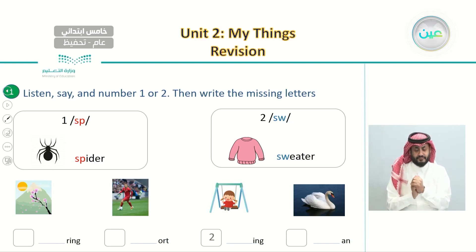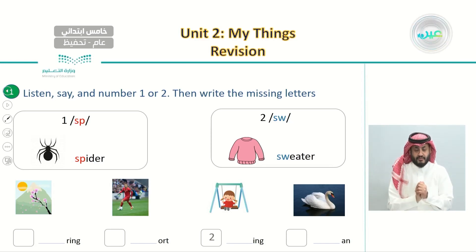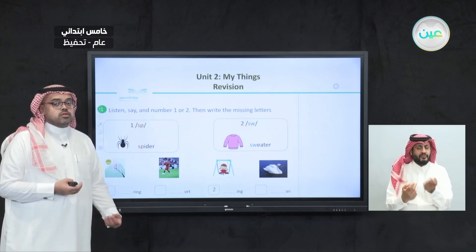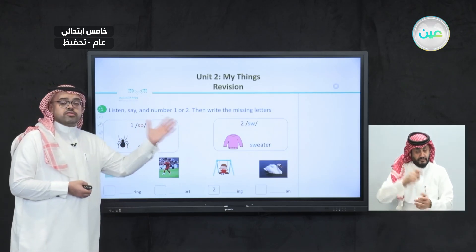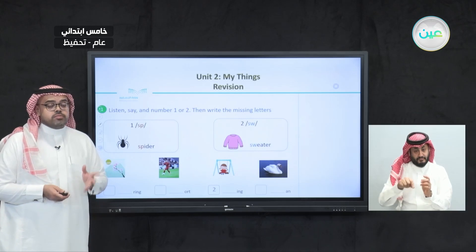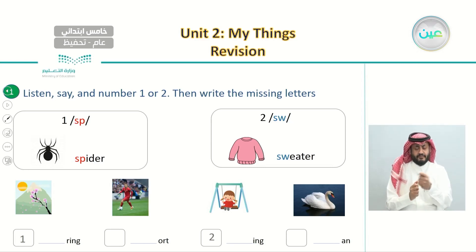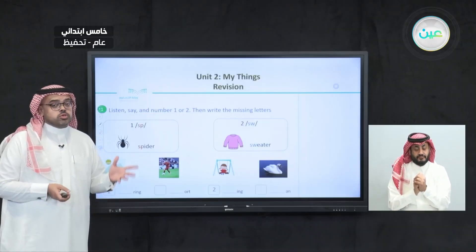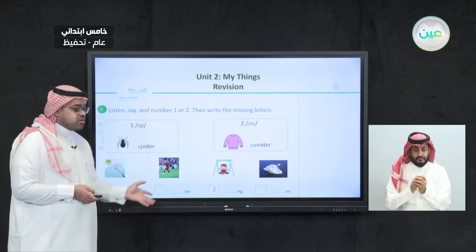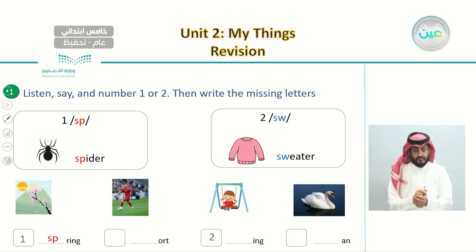Let's listen to the first word. The first word is spring. Say after me: spring. Does this word belong to the first sound or the second one? It belongs to the first sound, so we write number one in the square. Should we fill it in with SP or SW? We fill it in with SP. The word is spring, which is the season that usually comes after winter.